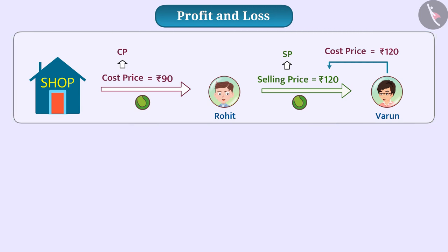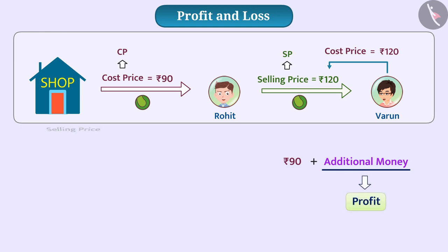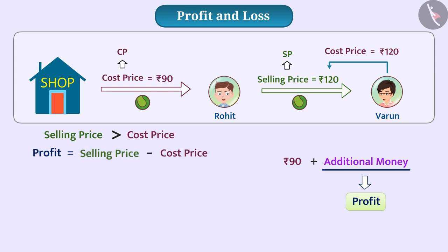In this transaction, Rohit has recovered the value of the ball which is Rs 90, but he also received some additional money. This additional amount is called Profit. Whenever the selling price is higher than the cost price, the person earns profit. This profit is obtained by subtracting the cost price from the selling price.